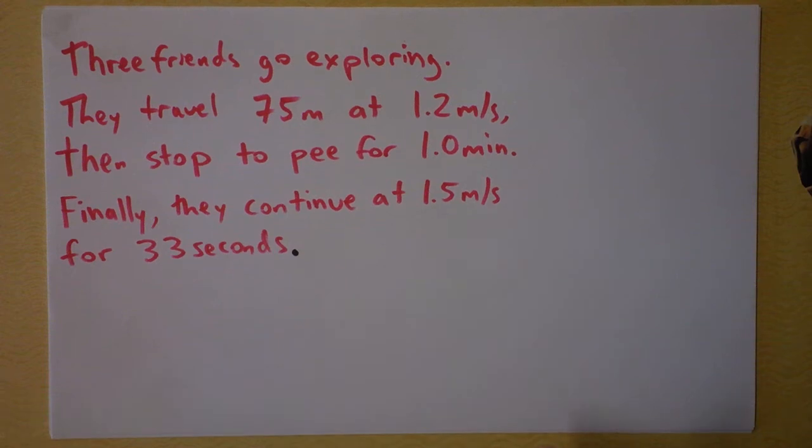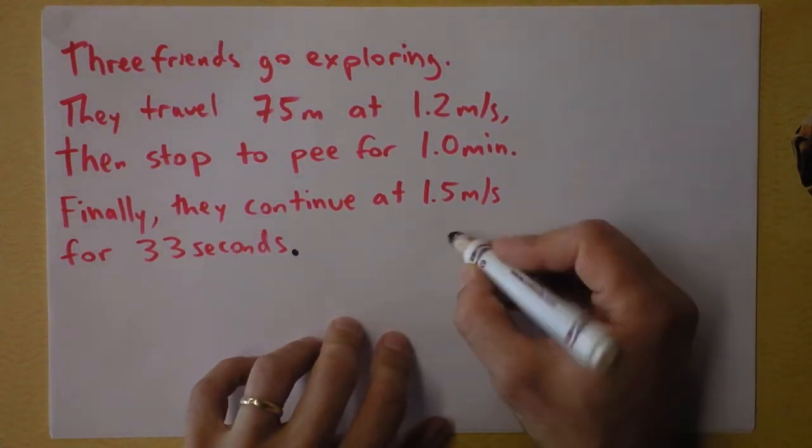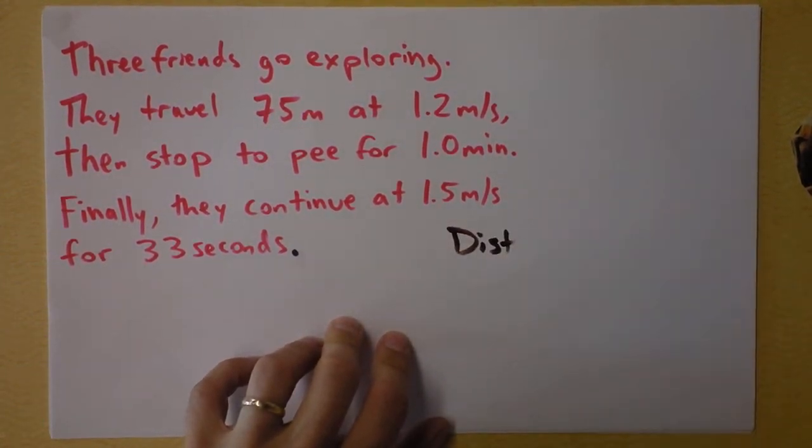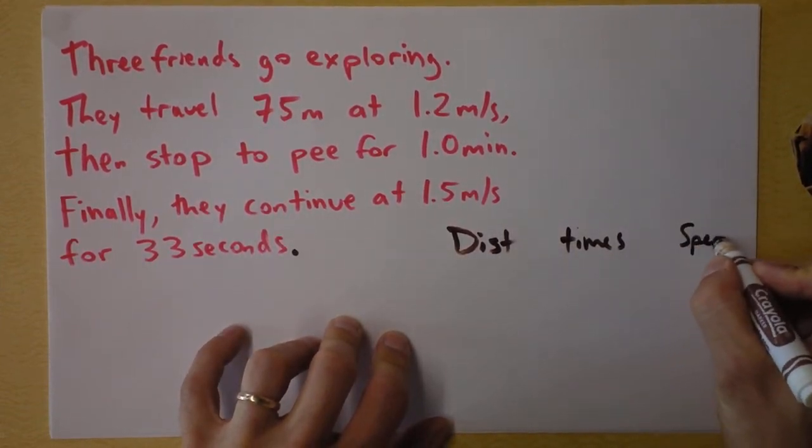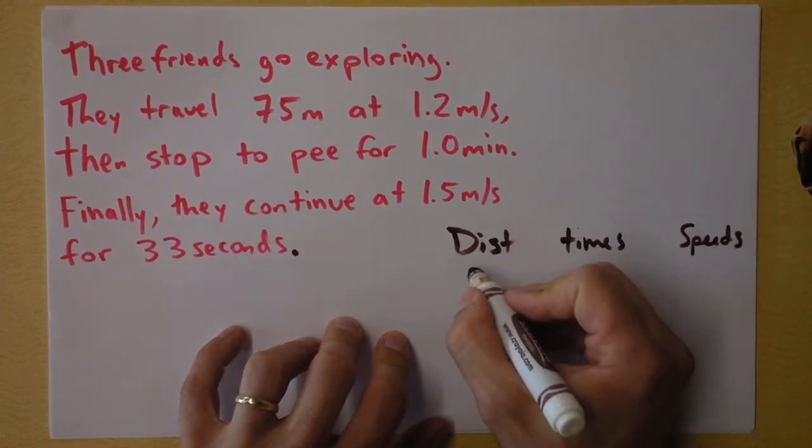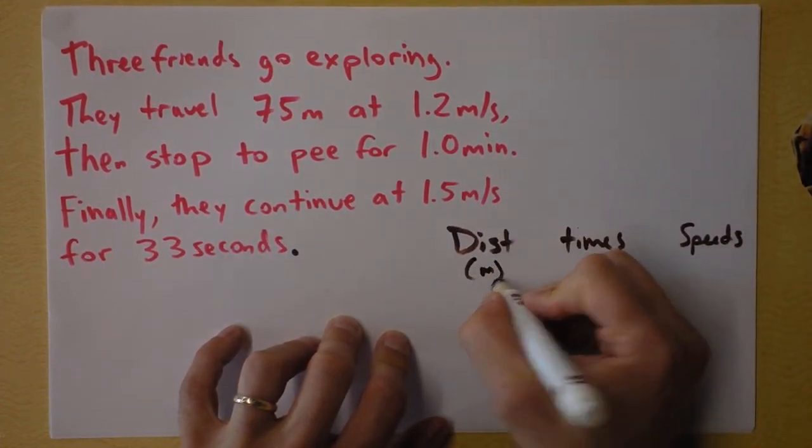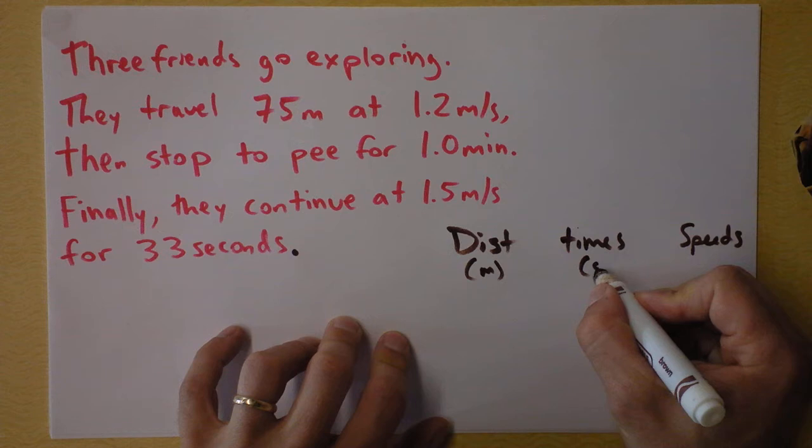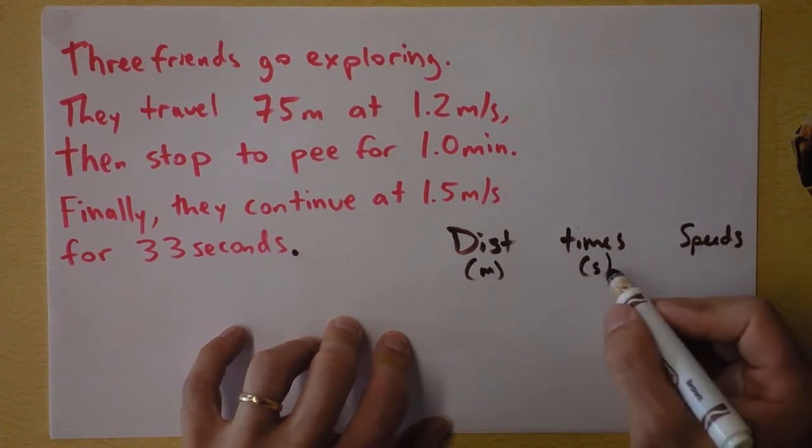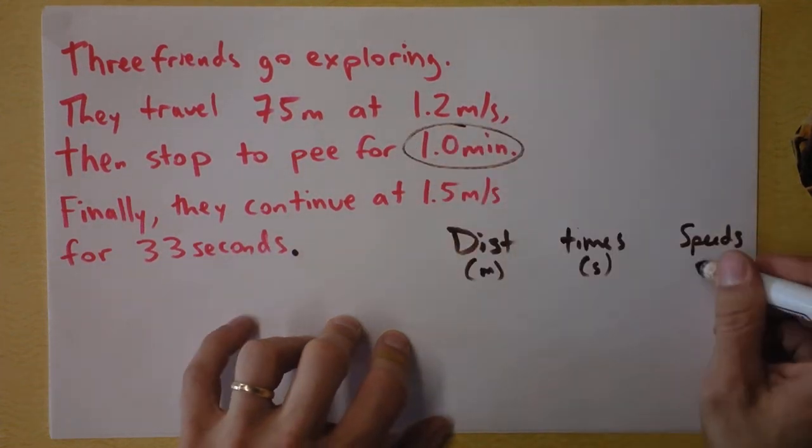We need to make a table in order to do this problem. So I'm going to make a table that lists distances and times and speeds. And my distances are going to be in units of meters, of course, times in units of seconds. And speeds will be in units of meters per second.